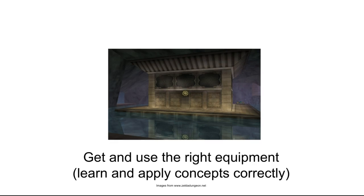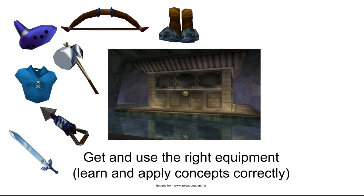You have to get and use the right equipment for the dungeon, which means you have to learn and apply your concepts correctly. This is the water temple — pretty much everybody hates the water temple — because water physics is a bummer and there's always that one key you forget, and then you get all the way to the end and have no key and can't unlock the door. Here's the equipment that's going to help you in this dungeon: it'll help you swim underwater, kill enemies, move around, and get to that final boss. The equipment on the right, unfortunately, is nice to have but really not going to help you here. For example, if you try to throw a boomerang underwater, it's not going to go very far — this is like using the wrong concepts for a particular application.